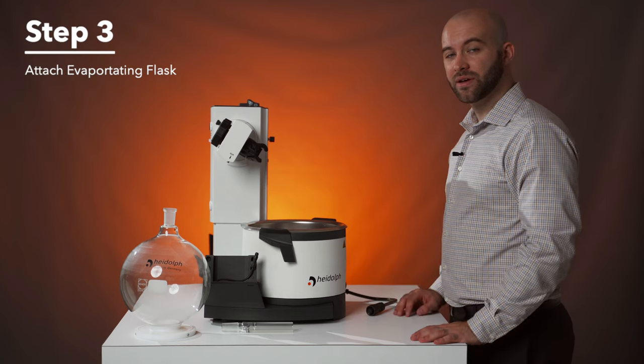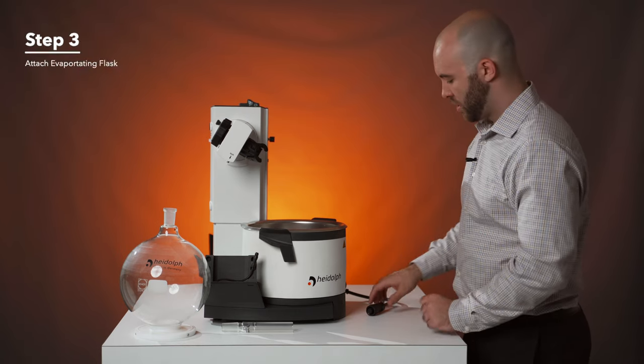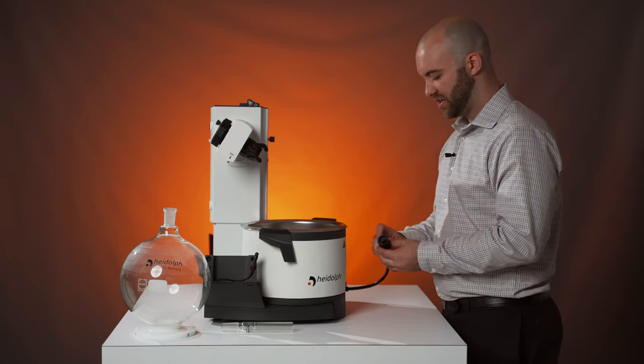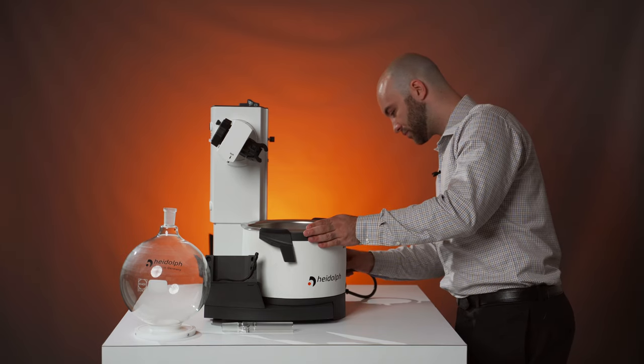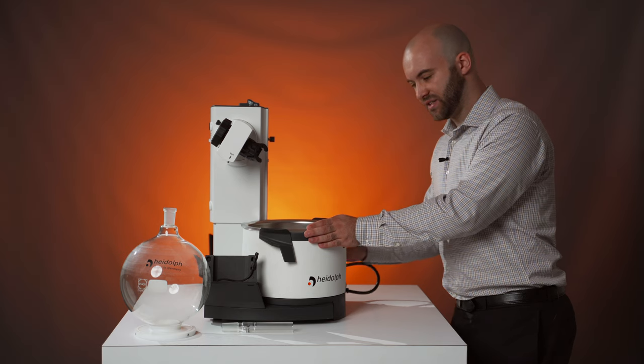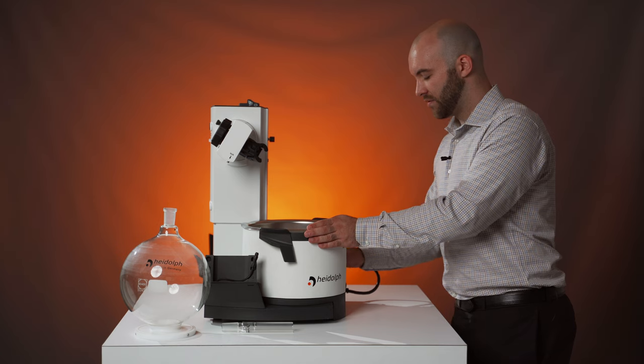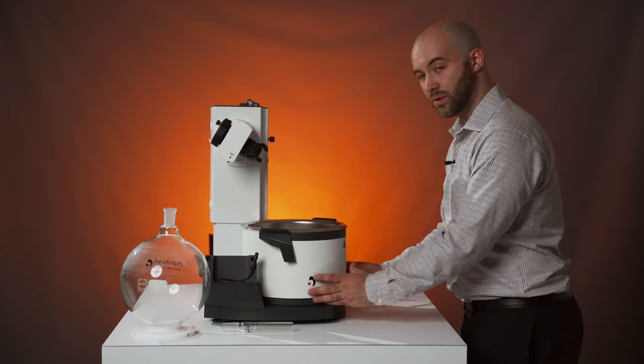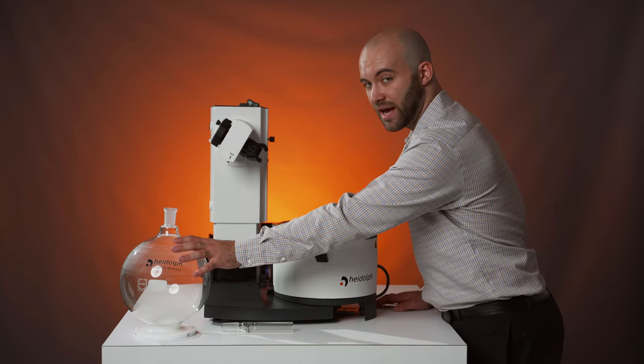Step three, we're going to add the evaporation flask to our HiVap. While we're here though, we're going to first attach the HiVap itself to the heating bath using this IP67 screwing cable. It slots right in the back here, lines with notches, and can be screwed on fairly easily. That is so at any time you can remove the bath for filling and emptying. Once that's been screwed on, I'm going to pull the bath out a little bit since we will be using a five liter flask.